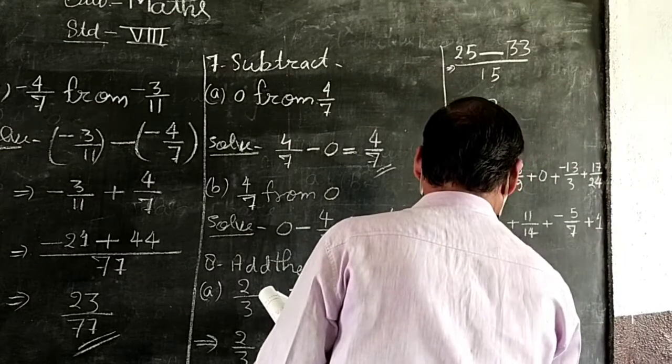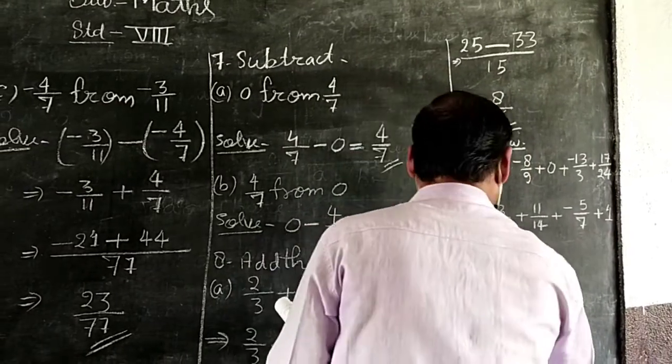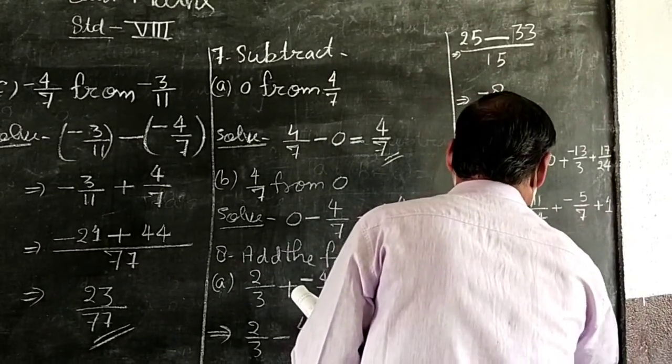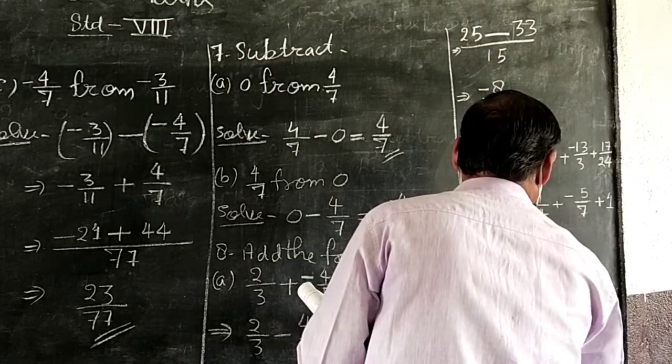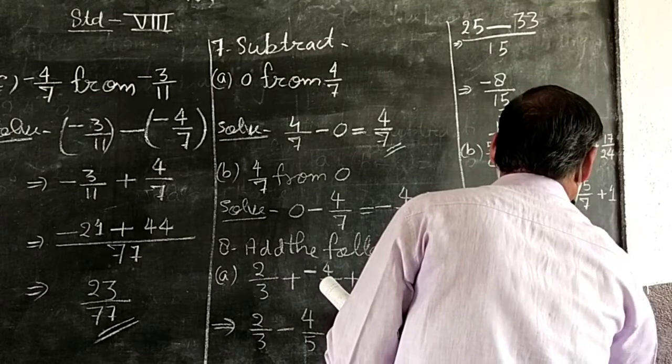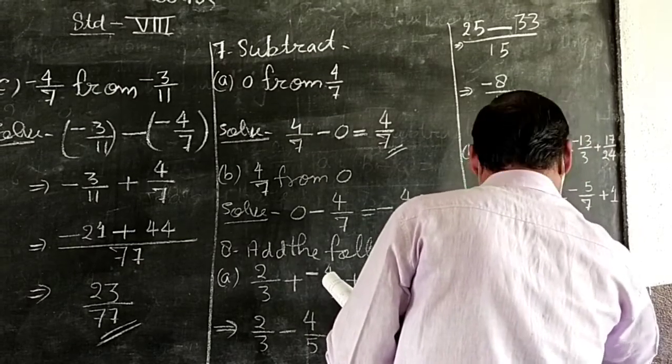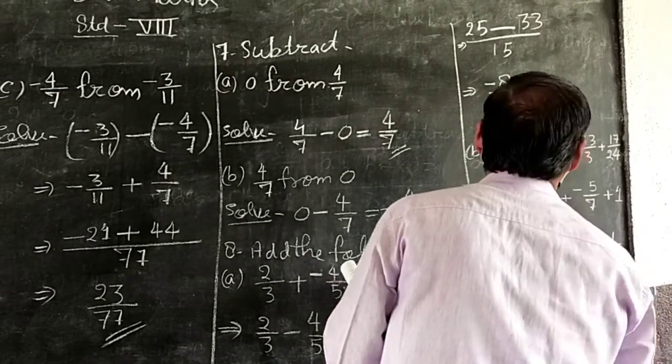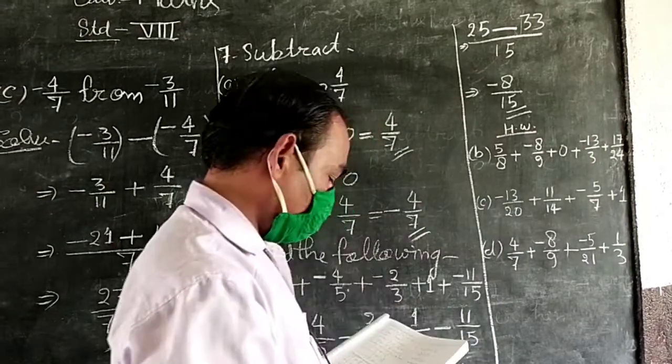Part D: 4 upon 18 plus minus 8 upon 9 plus minus 5 upon 21 plus 1 upon 3. This is homework. Okay, that's it.